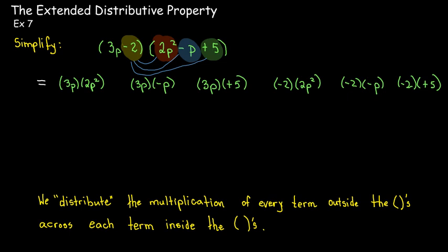Most of the time I'll do these multiplications mentally. The results are: positive 6p cubed, minus 3p squared, plus 15p, minus 4p squared, plus 2p, and minus 10. My like terms are the p squared terms, which combine to make negative 7p squared, and the terms that just have p, which make 17p.